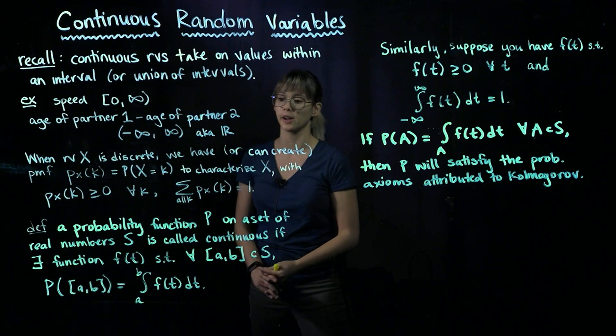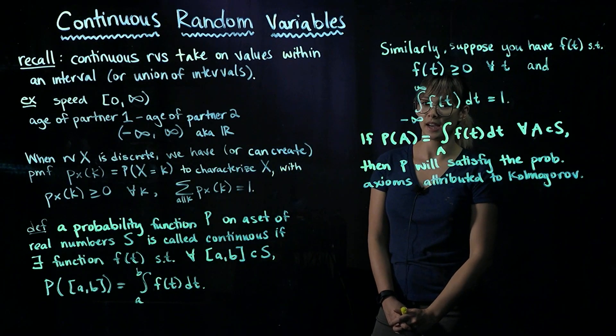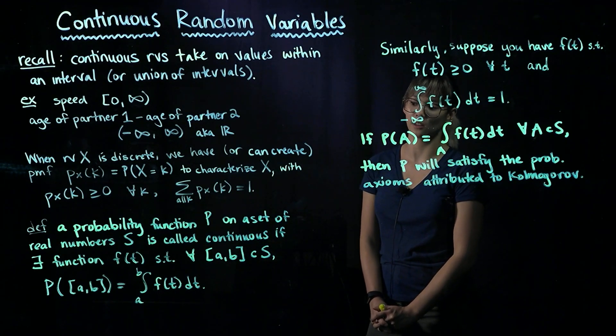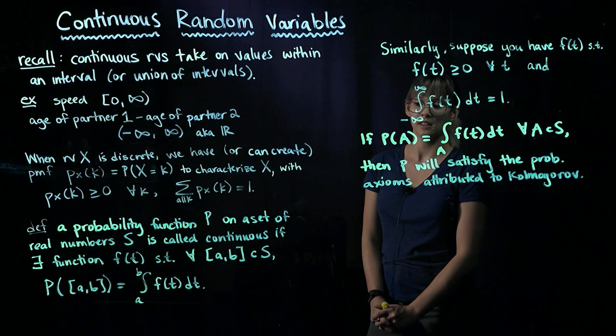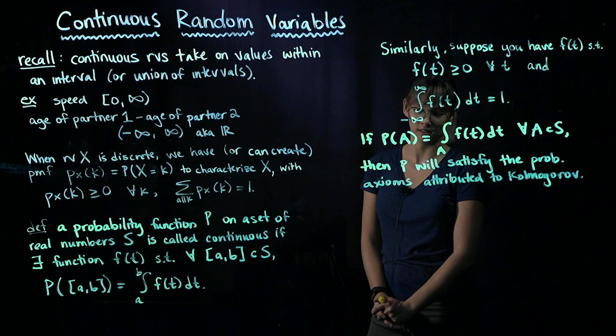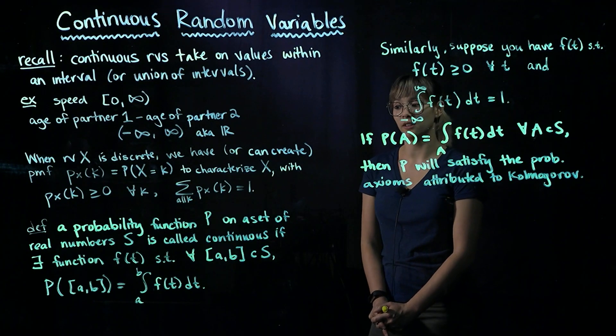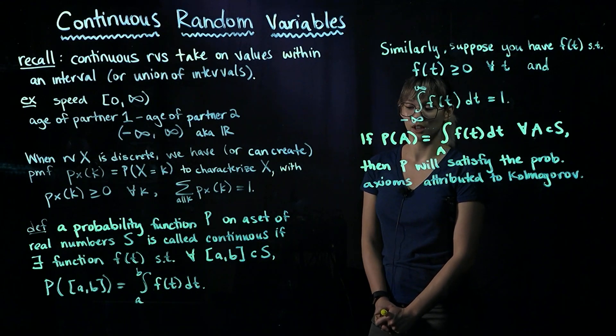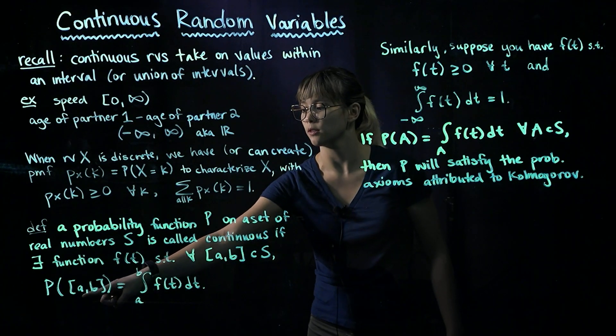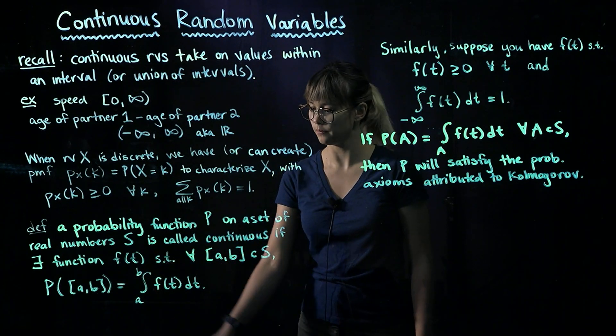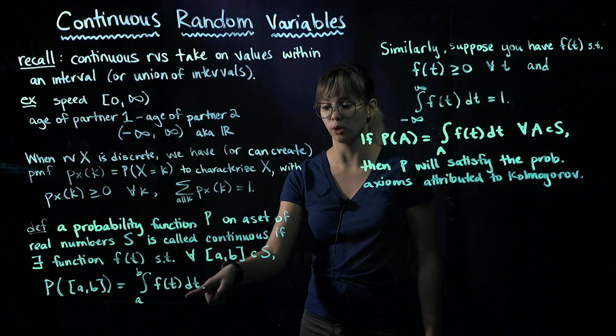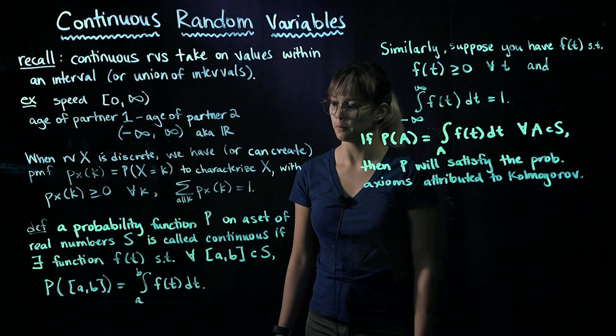So what we need to do is come up with a continuous version of this PMF. A probability function P on a set of real numbers S is called continuous if there exists a function F of T, such that for all intervals A to B contained in S, the probability of the interval A to B is equal to, and now here we're going to integrate from A to B, so from the lower endpoint of our interval to the upper endpoint of our interval, and we're integrating over this function F of T. And of course we're integrating with respect to T.